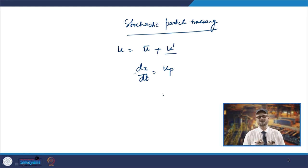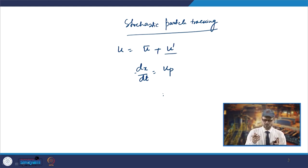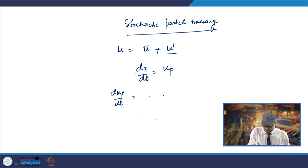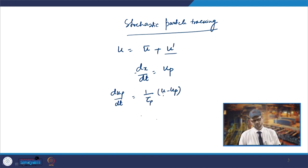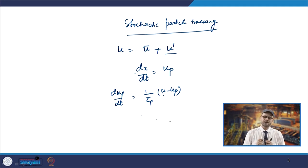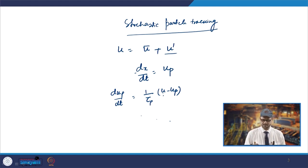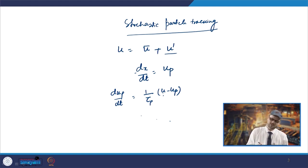The trajectory equation can be simplified by linearizing the source terms. The equation dup/dt can be rewritten as (u − up)/τp, where τp is the particle relaxation time — a unit of time. Using discretization schemes, the solution at time step n+1 is: (up^(n+1) − up^n)/Δt = (1/τp)(u* − up^(n+1)).